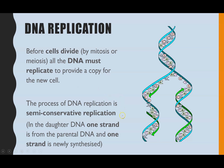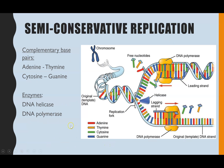The way that DNA replicates is described as being semi-conservative. What that means is that in the daughter DNA, one strand is from the parental DNA and one strand is newly synthesized. Daughter DNA is the DNA that you create; parental DNA is the original DNA. So within the DNA that has just been made, one strand is original and one strand is newly synthesized.